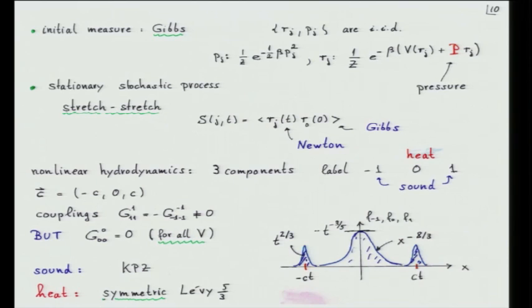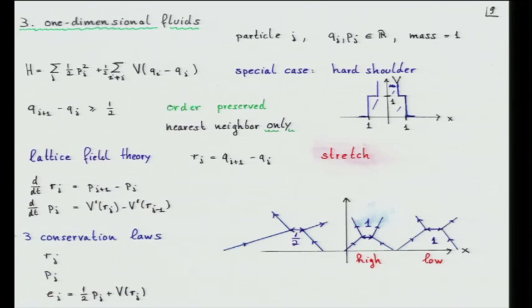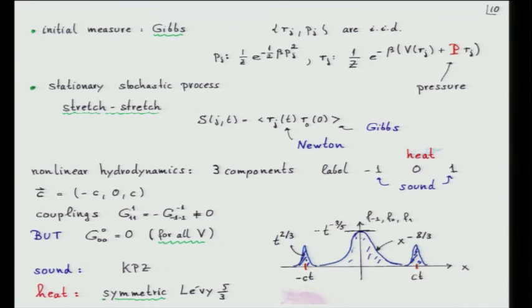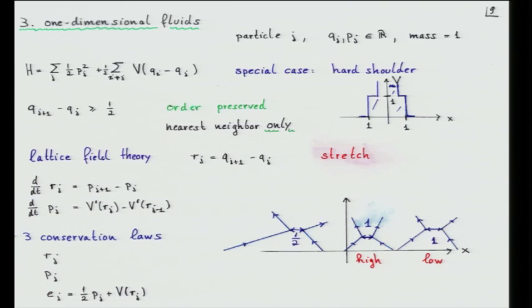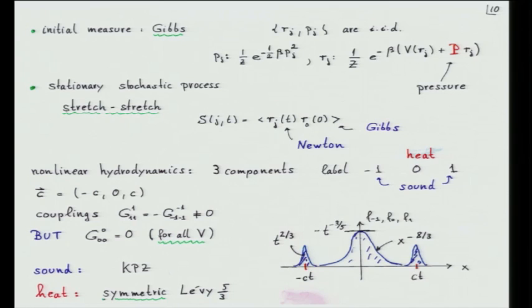I need to give you a bit more background. We can look at the equilibrium measures. In the infinite volume limit, the momenta are distributed according to a Maxwellian and the positions are distributed like e to the minus beta of the potential. But because we have this extra conservation law — the R's are a conserved field — this introduces an extra Lagrange parameter P. The real potential is the potential plus a linear piece, and looking at this formula, P is nothing else but the average force, i.e., the pressure.